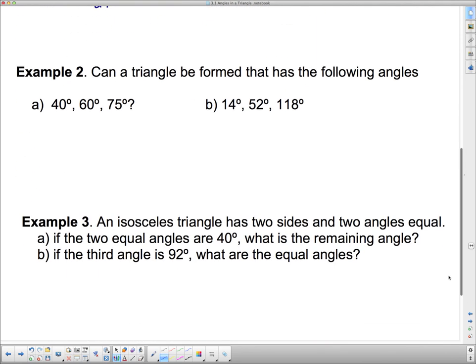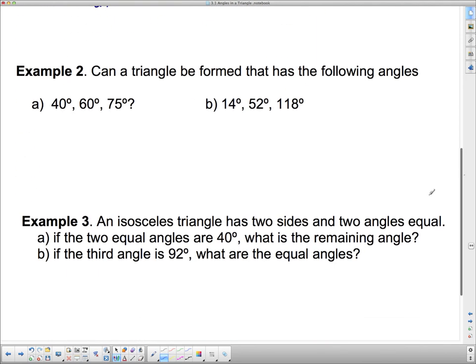Now taking a look at the next two questions: can a triangle be formed that has the following angles? Well, I don't know, do they add up to 180 degrees? 40 plus 60 is 100, plus 75 is 175. So therefore, no, it's not 180 degrees.